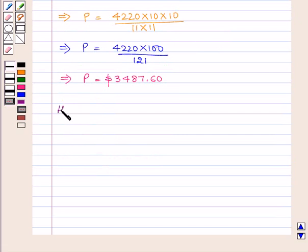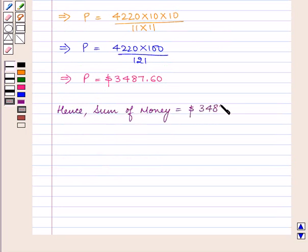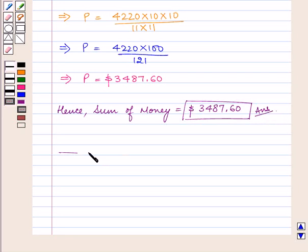Hence, the sum of money lent is equal to $3,487.60, which is our answer. This completes our session. Hope you enjoyed the session.